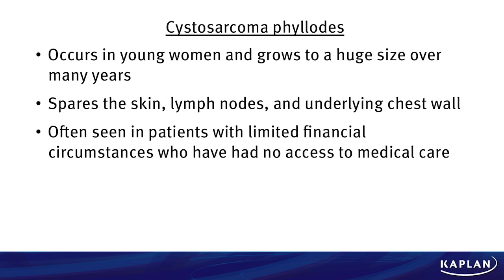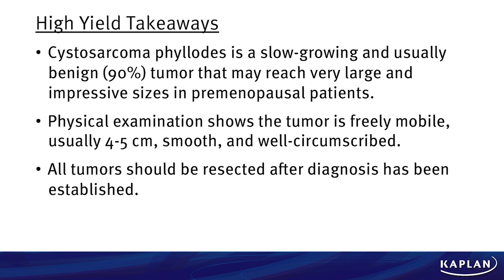Some key take-home points about cystosarcoma phylloides: it occurs in young women and grows to a huge size over many years. It spares the skin, lymph nodes, and underlying chest wall, and it is often seen in patients with limited financial circumstances who have not had access to medical care. The boards will sometimes present a patient like that with a very large mass that has grown over many years.